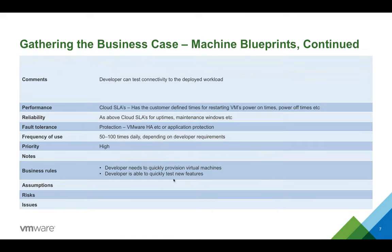Business rules are the rules that the business will put in place for provisioning this service — for example, the developer needs to quickly provision virtual machines and be able to quickly test new features. In this example, developers were needing to build something very quickly, test a couple of lines of code, and then trash it. Virtual machines would often be up for only an hour or two. Then we have a level for assumptions, issues, and risks. My experience is that assumptions make an idiot out of you and out of the customer as well, so try not to have as many assumptions — try to definitely drill things down.